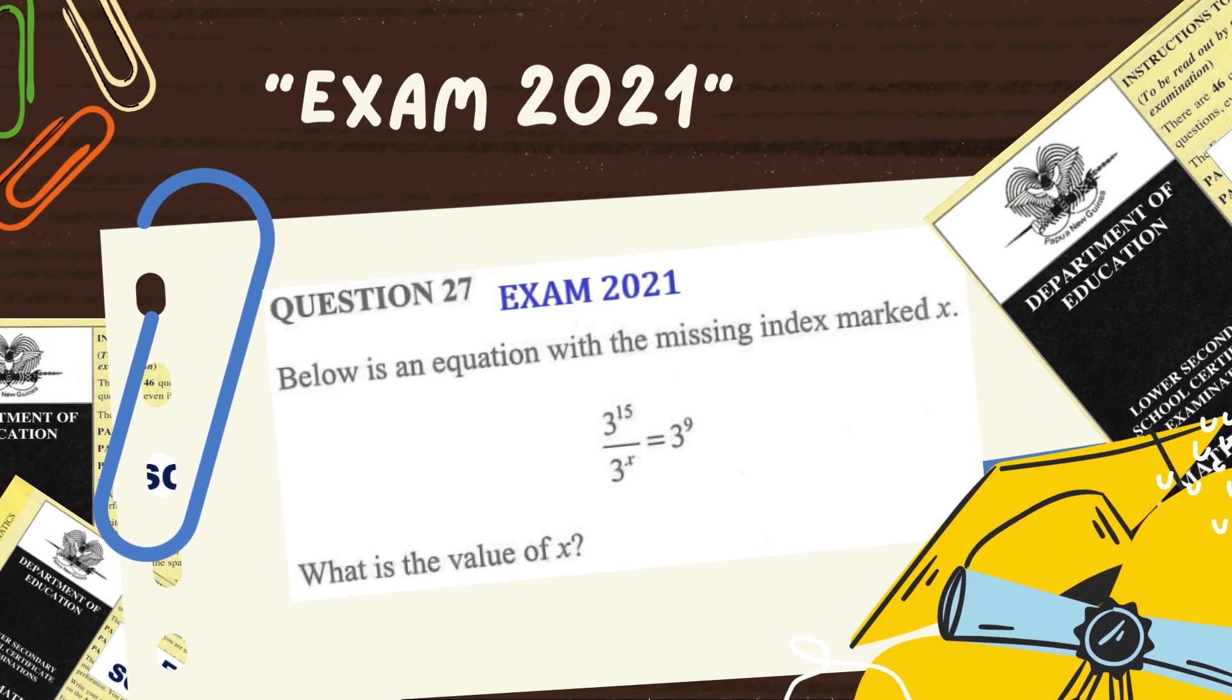Similarly, in exam 2021, the same type of question appeared but in different setting. The fractional part can be simplified by applying the laws of indices and then compares the bases of both sides. Here is the solution.